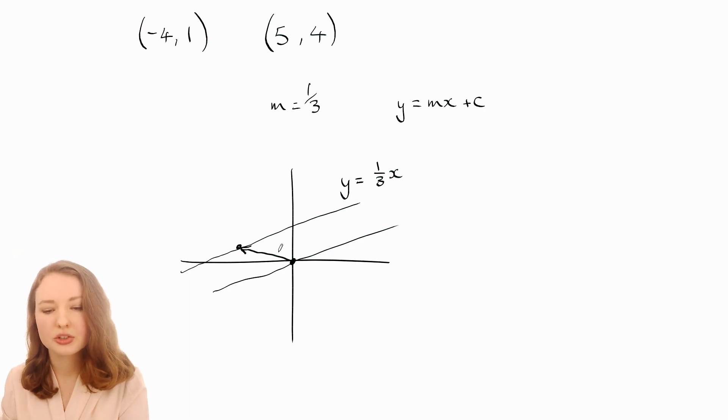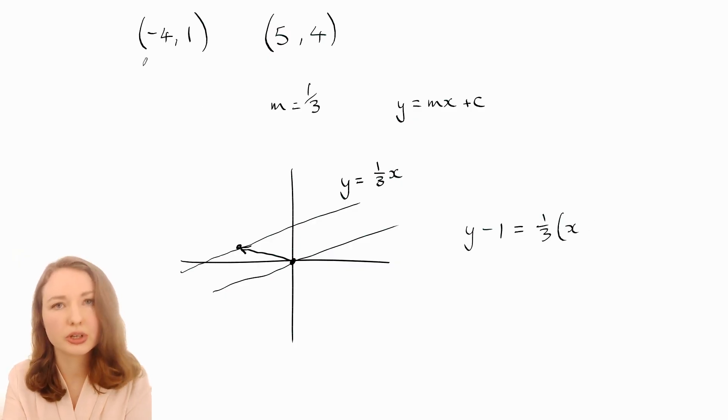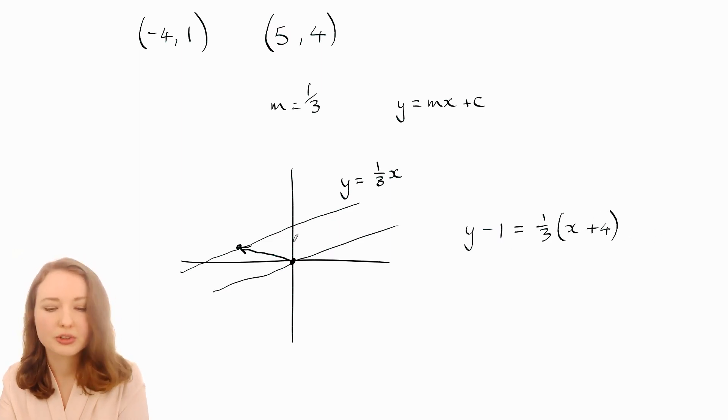Now there's a way to shift graphs which works for any kind of graph not just straight lines which is to replace x and y with (x minus the x-coord here) and (y minus the y-coord here) so you would take this original equation which is for that line replace the y with y minus the y-coord here which was 1 and replace the x with x minus the x-coord here which was -4 so x minus -4 is x plus 4. So that works for shifting any graph like circles, parabolas, hyperbolas, whatever. If you replace x and y with (x - x1) and (y - y1) that'll shift it to those coordinates.